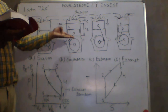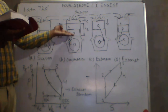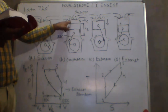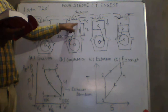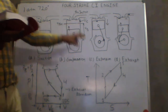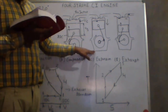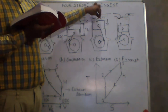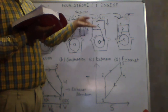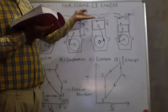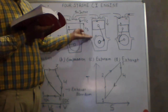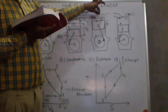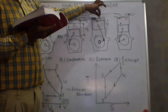During the compression stroke, the air induced during the suction stroke is compressed into the clearance volume; both valves remain closed. Then in the expansion stroke, fuel injection starts nearly at the end of the compression stroke. When the piston moves upward, the fuel starts to inject.